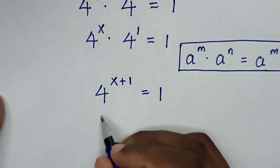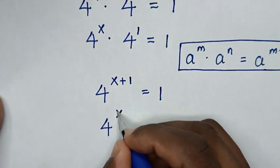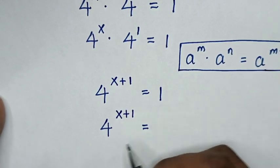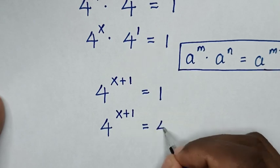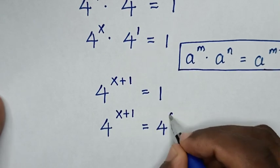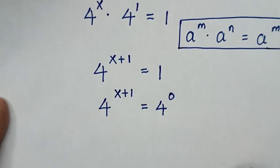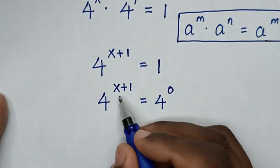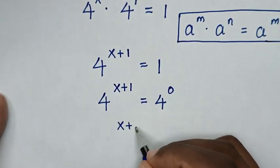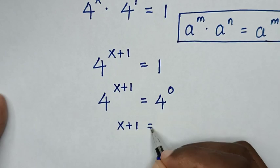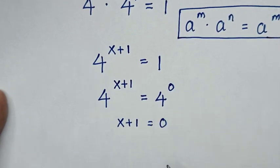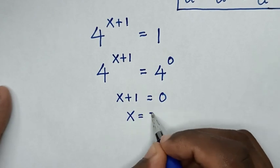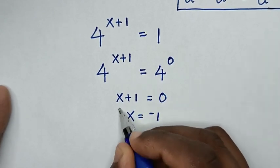Then 4 power x plus 1 is equal to 1. For 1 to have the same base of 4, we write 1 as 4 power 0. Now because we have the same base of 4, we compare the powers, so it will be x plus 1 is equal to 0. Then we take 1 to the right side, so x is equal to negative 1.